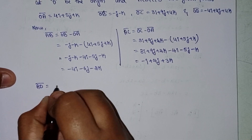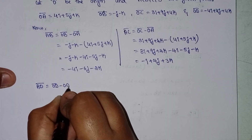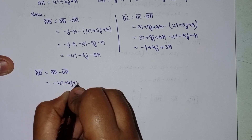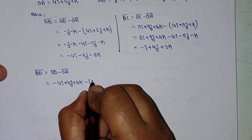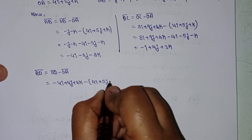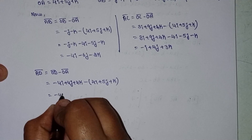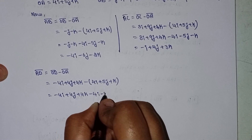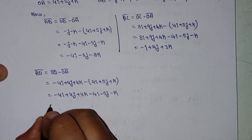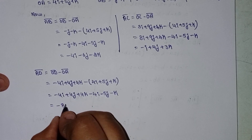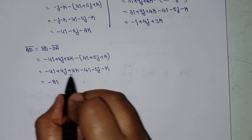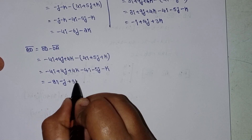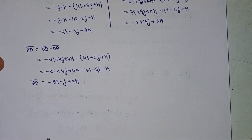Next, AD = OD minus OA = (-4i + 4j + 4k) minus (4i + 5j + k). So -4i minus 4i is -8i, 4j minus 5j is -j, and 4k minus k is +3k. Therefore AD = -8i - j + 3k.